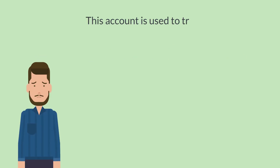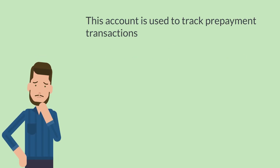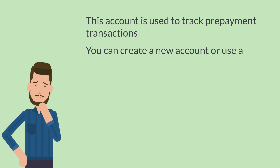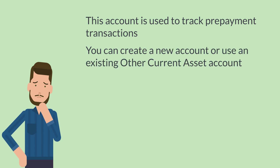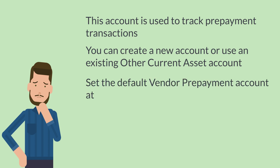Next, you'll need to set up a vendor prepayment account. This account is used to track prepayment transactions. You can either create an entirely new account or use an existing account, as long as the account is an other current asset type account. You can set the default vendor prepayment account at the company level from your accounting preferences page, or at the subsidiary level from the subsidiary record.